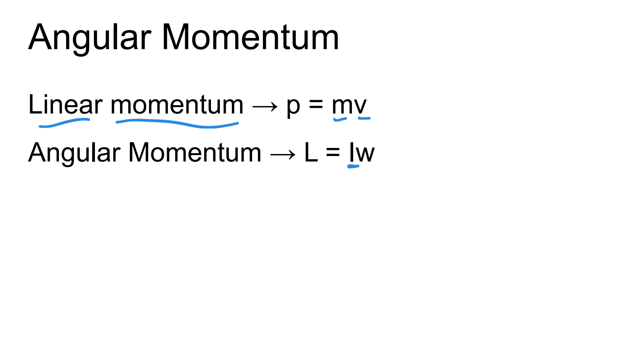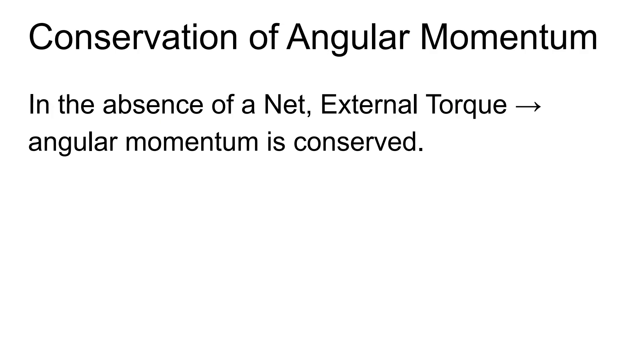The units for regular momentum are kilogram meters per second. For angular momentum, inertia is kilogram meters squared, and omega is radians per second. We don't rename it, so we stick with this long notation. You'll sometimes see radians just dropped, so a lot of times you'll just see kilogram meters squared per second. The symbol we use to signify angular momentum is L, capital L.